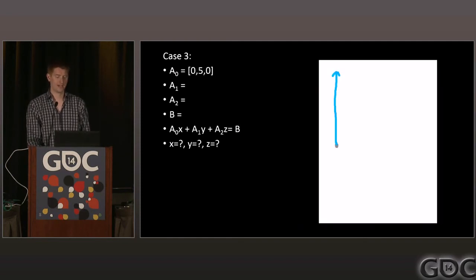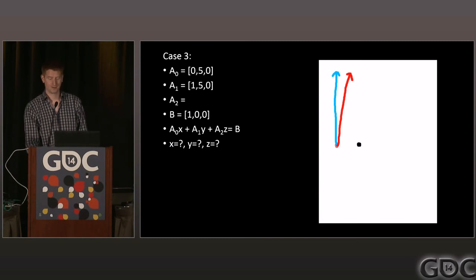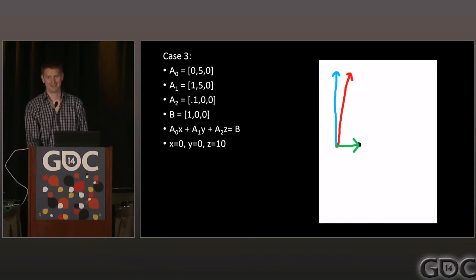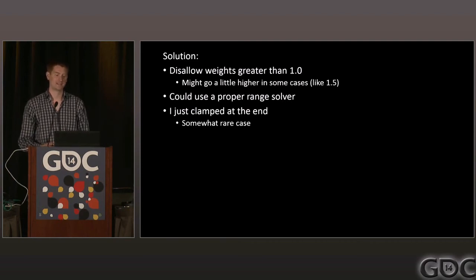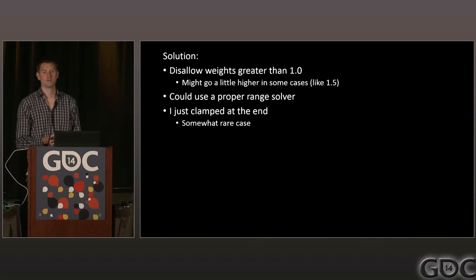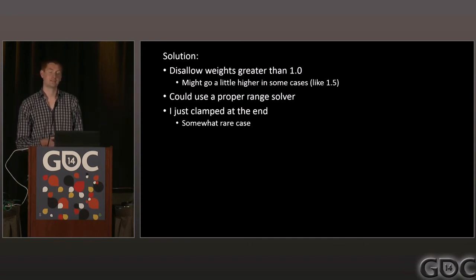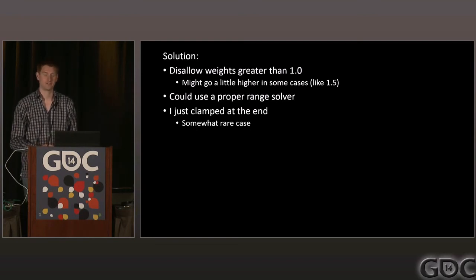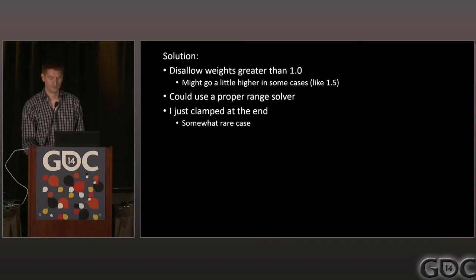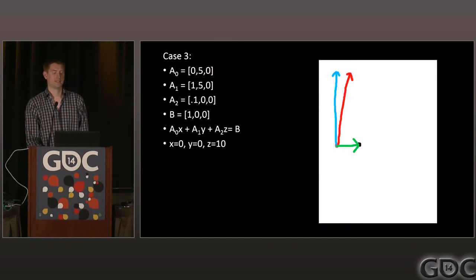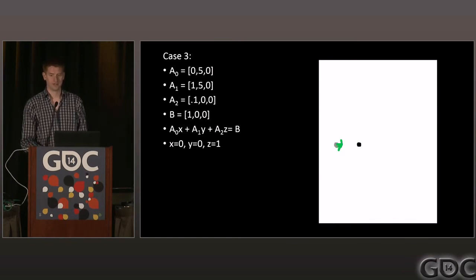Another case: one joint goes up, another goes up and to the right, and we also have a tiny vector that moves slightly to the right. The solver might say 'make that tiny shape weight 10 and we'll be right there' — which is also not what we want. The common solution is to constrain weights between 0 and 1.0, or maybe 1.5 if mocap might go farther than your original poses. You can use a proper range solver, or just clamp at the end. For the non-negative portion you need a non-negative solver; for weights that go too high you can just clamp, and that's what I did. Figuring out which shapes not to use is just as important as which ones to use — sparsity is very important.